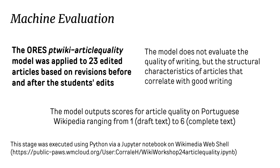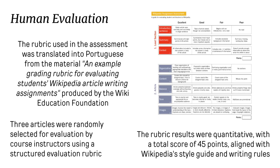The ORES model was utilized to assess 23 edited articles and analyze the structural elements associated with effective writing. Using the Portuguese model, which scores on a scale from 1 (draft) to 6 (completed articles), it measured the quality of the text. Additionally, we employed a rubric adapted from the Wiki Education Foundation for evaluation on 300 selected articles edited by the students, scoring out of 45 points based on the Wikipedia style guide.